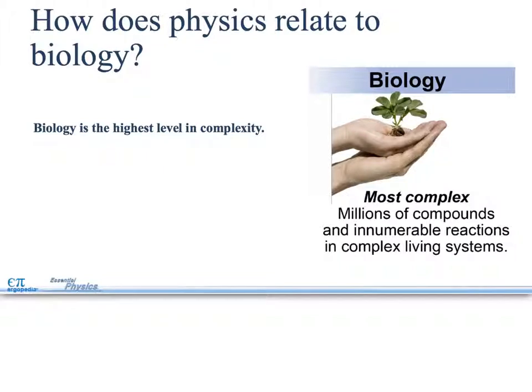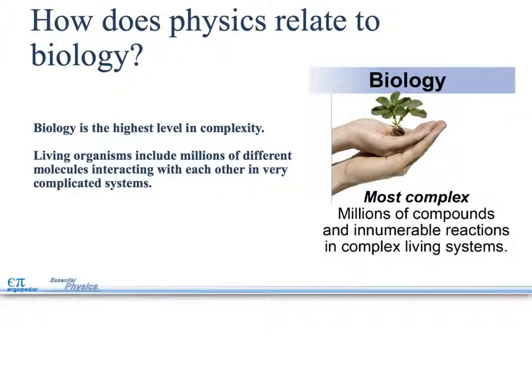How does physics relate to biology? Biology is the highest level in complexity. It's the most complex. Millions of compounds and innumerable reactions in complex living systems. Living organisms include millions of different molecules interacting with each other in very complicated systems. Where we talked about physics being the bottom and chemistry putting all these chemicals together, biology, you're putting all these agents together and now you're having them interact with one another and try to complete a homeostasis relationship with the body or with whatever living organism you're talking about.